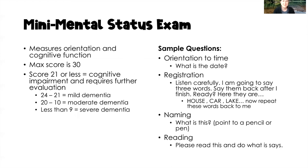One of the more common assessment tools is the Mini Mental Status Exam, or MMSE, which measures orientation and cognitive function. The maximum score is 30, and anything less than 21 indicates some degree of cognitive impairment requiring further evaluation. Scores of 24–21 indicate mild dementia, 20–10 indicate moderate dementia, and anything less than 9 is indicative of severe dementia.